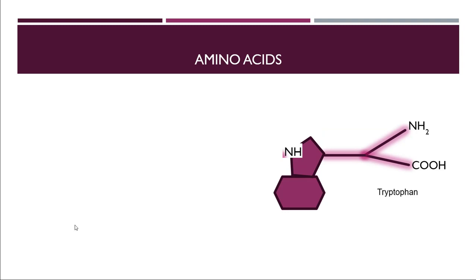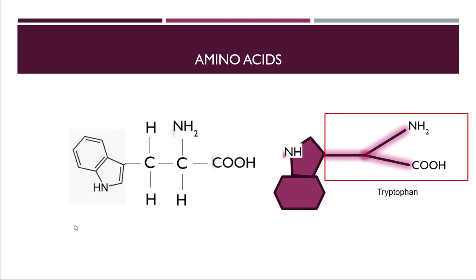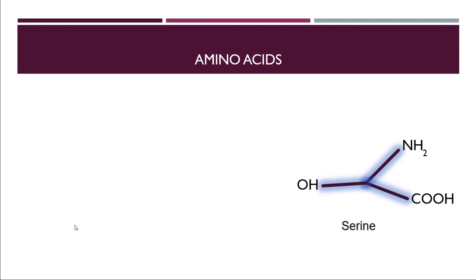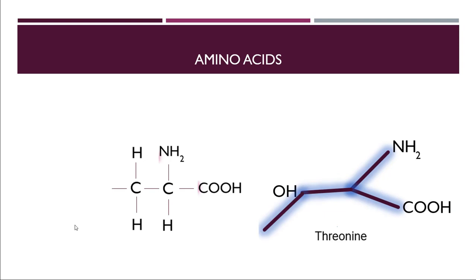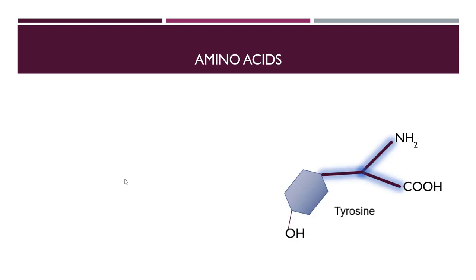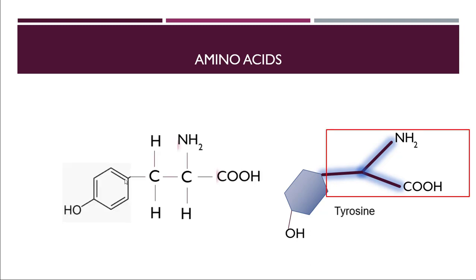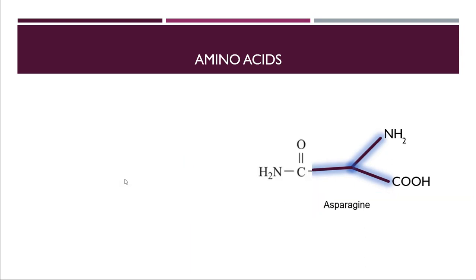Next is tryptophan — print out the fork and attach the indole ring molecule to it. Next is serine — print out the fork and attach an OH group. Next is threonine — attach one more carbon atom and shift the OH onto that carbon, attaching CH3 here. Next is tyrosine — fork attached with a phenol group. All straightforward at this point.